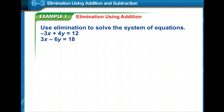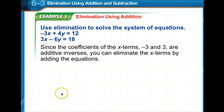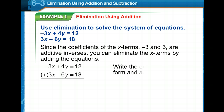Looking at an example, we're going to use elimination to solve this system of equations. Notice that one equation has negative 3x and the other has positive 3x. That's going to make it easy to eliminate x because the coefficients are negative 3 and 3 — they're additive inverses. So we line them up in column form and rewrite the equations.